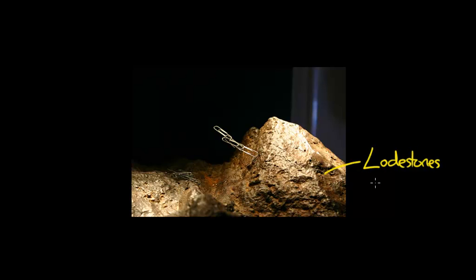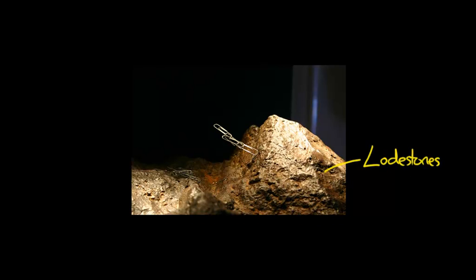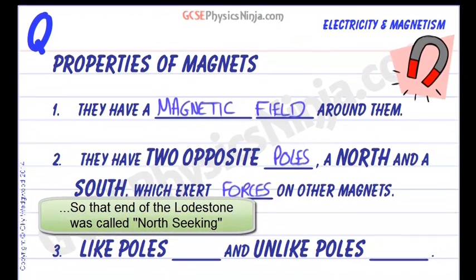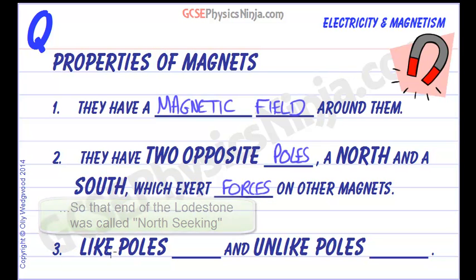They also found that lodestones when hung from a string would point in the same direction all the time. They would point to geographic north and we'll look at that in just a moment. So they discovered that like poles repel and unlike poles attract.